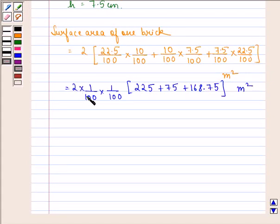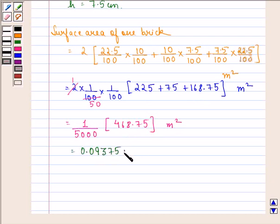Now we see that 2 into 50 gives us 100. So we have 1 in the numerator and 50 in the denominator and this becomes 1 divided by 50 into 100 is 5000 multiplied by 225 plus 75 plus 168.75 is 468.75 meter square. And that is equal to 0.09375 meter square.